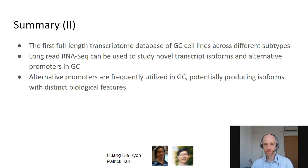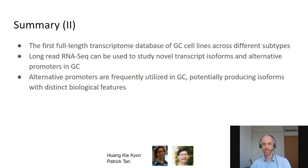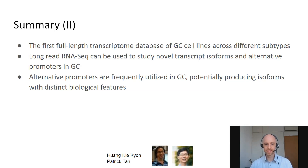To summarize this part: I've illustrated this project where we generated the full-length transcriptome dataset for gastric cancer cell lines across different subtypes — by itself a huge resource to understand variation across different gastric cancers. We showed that long-read data can be used to study novel transcript isoforms and also alternative promoters. By combining these datasets with publicly available short-read data, we can study the association with survival, and we do see that there seems to be usage of alternative promoters that can potentially be biologically important.